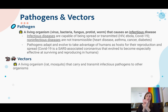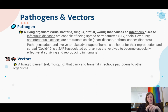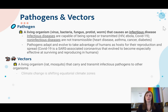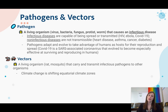Vectors — I'll give you a little rat and a bug here — are going to be a living organism. Typically rats or mosquitoes are common ones that carry and transmit infectious pathogens to other organisms. There are a lot of examples, and we'll go through a bunch, but there's a lot that mosquitoes can pass to humans.